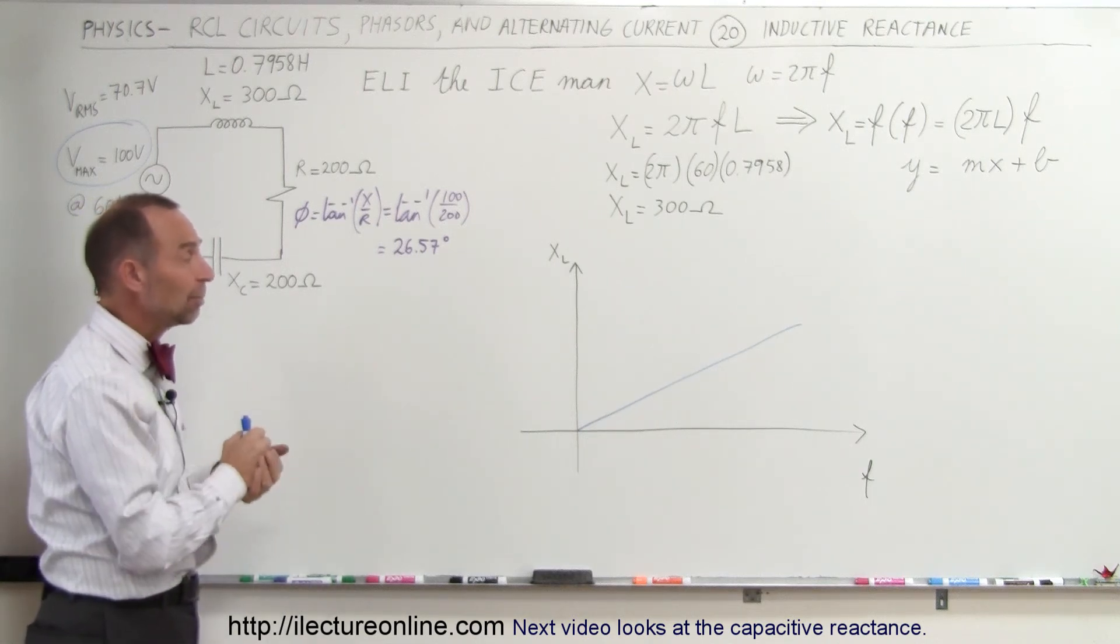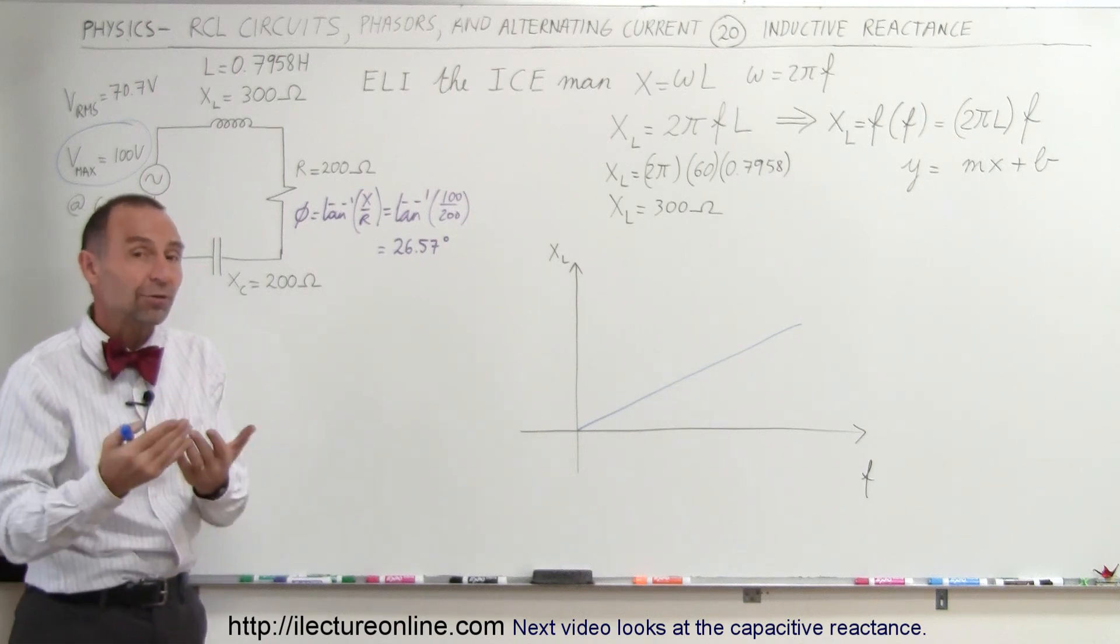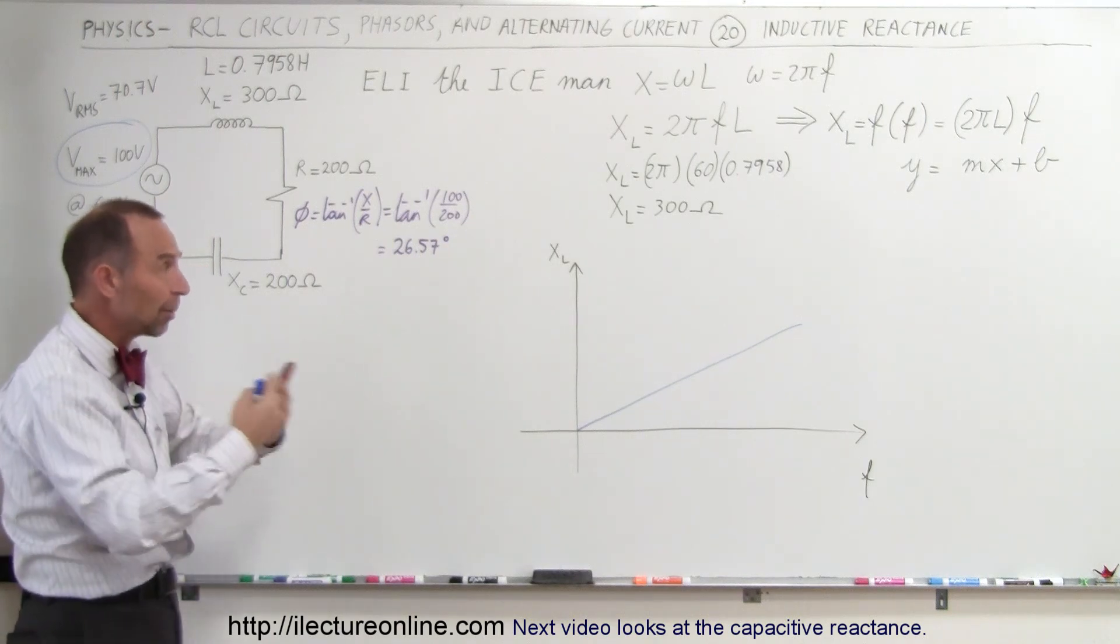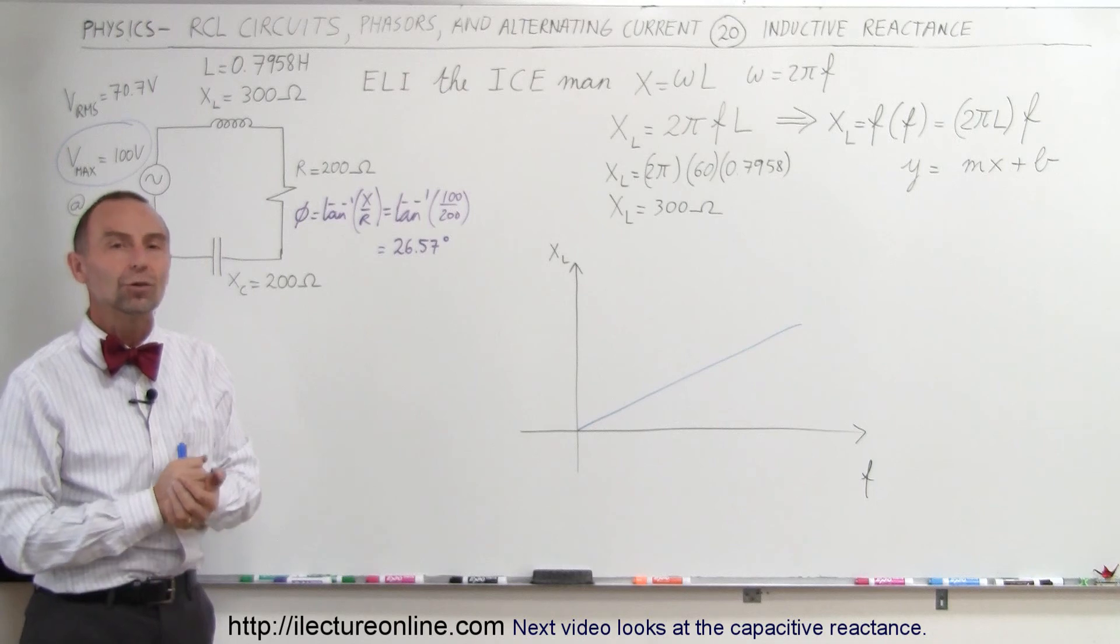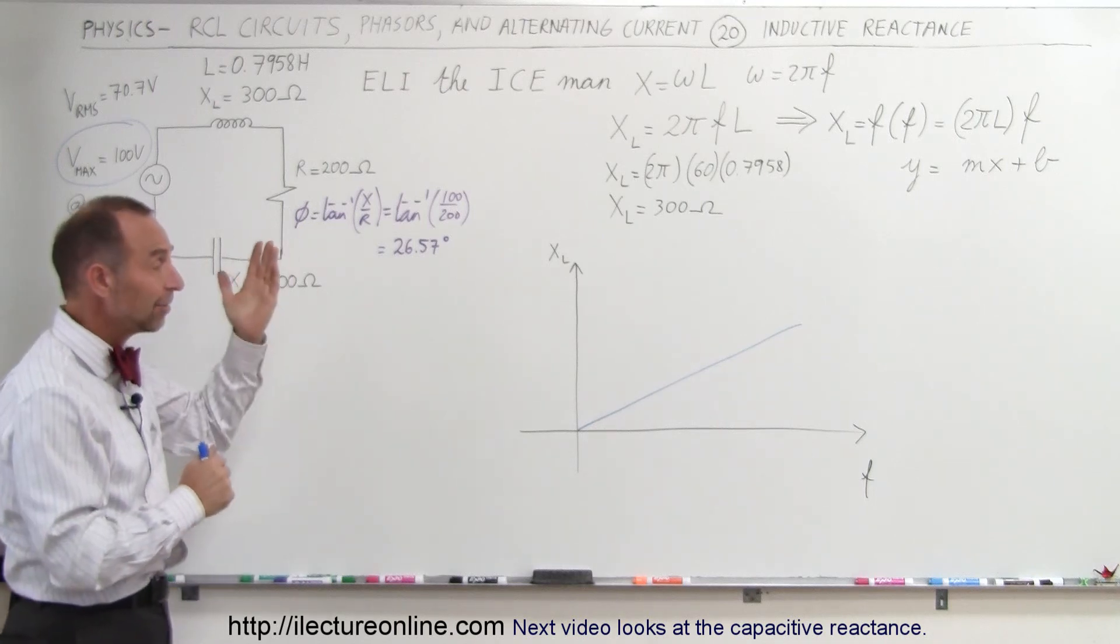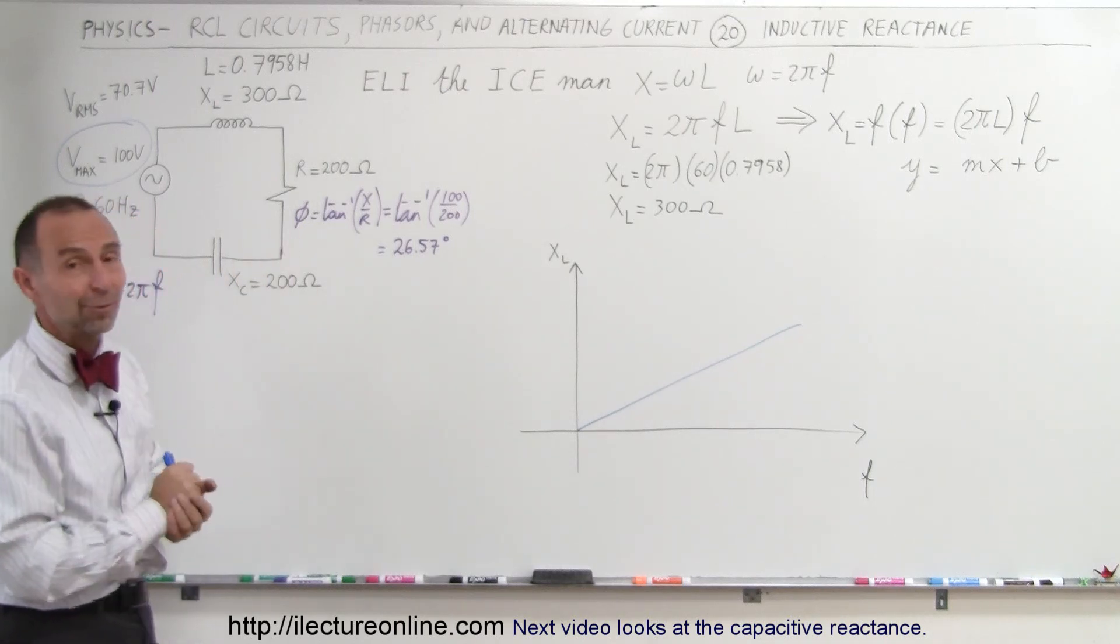And that's why the relationship is simply a linear relationship. If you double the frequency of the oscillation, you simply double the reactance, double the opposition to the change in the current. And that's how we do that. That's inductive reactance.